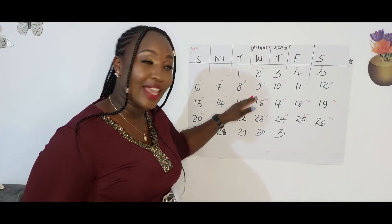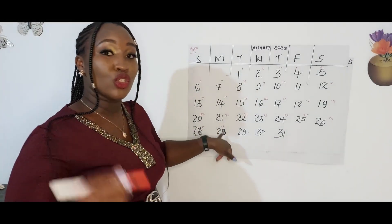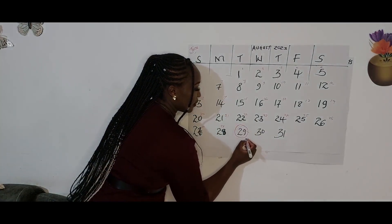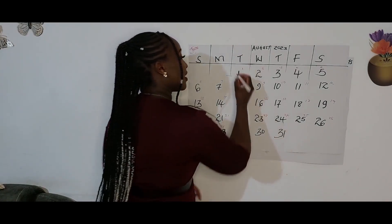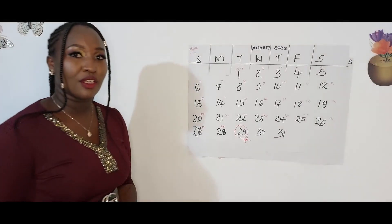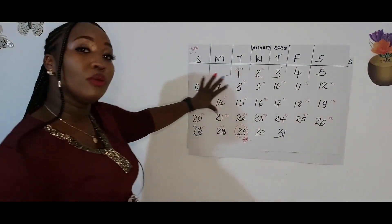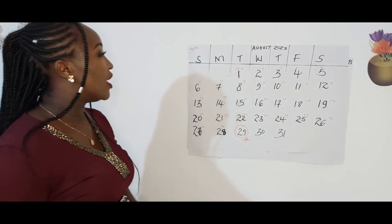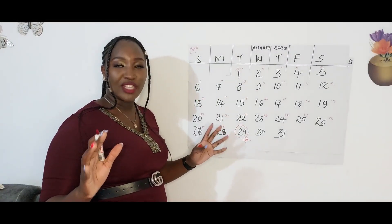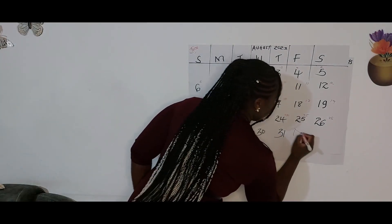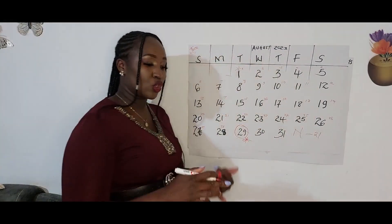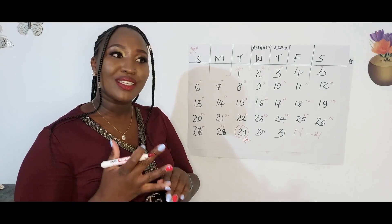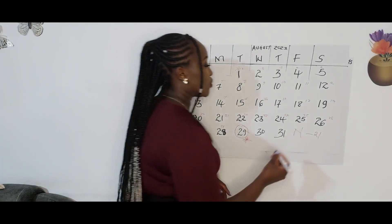Continuing: twenty-one, twenty-two, twenty-three, twenty-four, twenty-five, twenty-six, twenty-seven, twenty-eight. Jane's menstrual cycle is 28 days, so her next period starts on day 29. Normal menstrual cycles range from 21 days up to 35 days — it can be 21, 22, 25, 27, 28, 29, 30, 31, 32, up to 35.